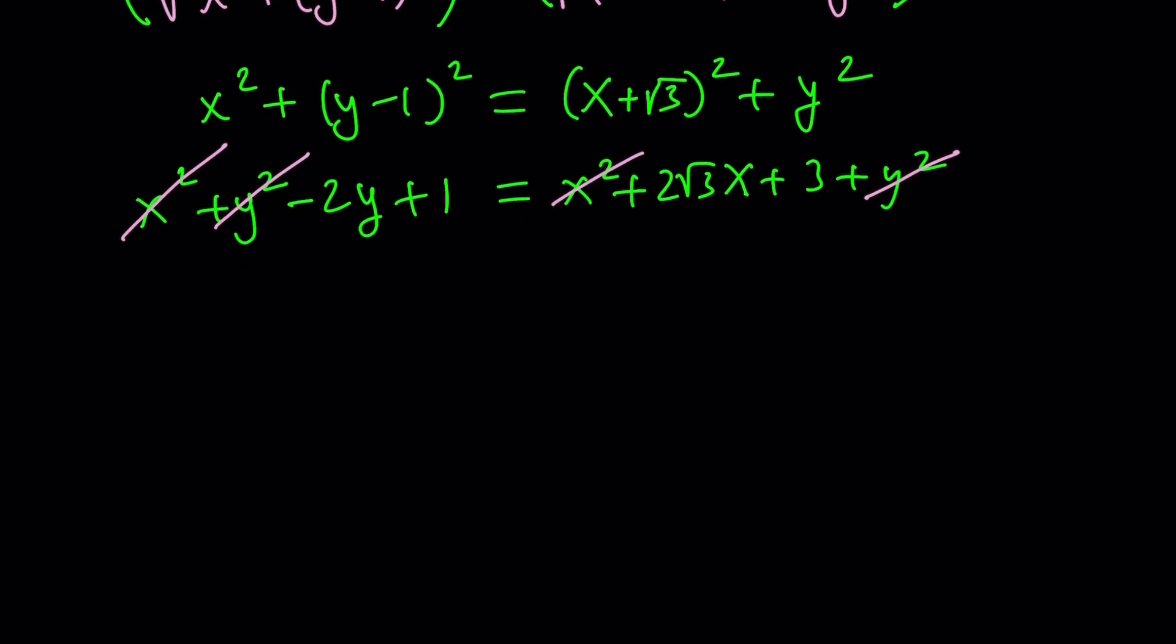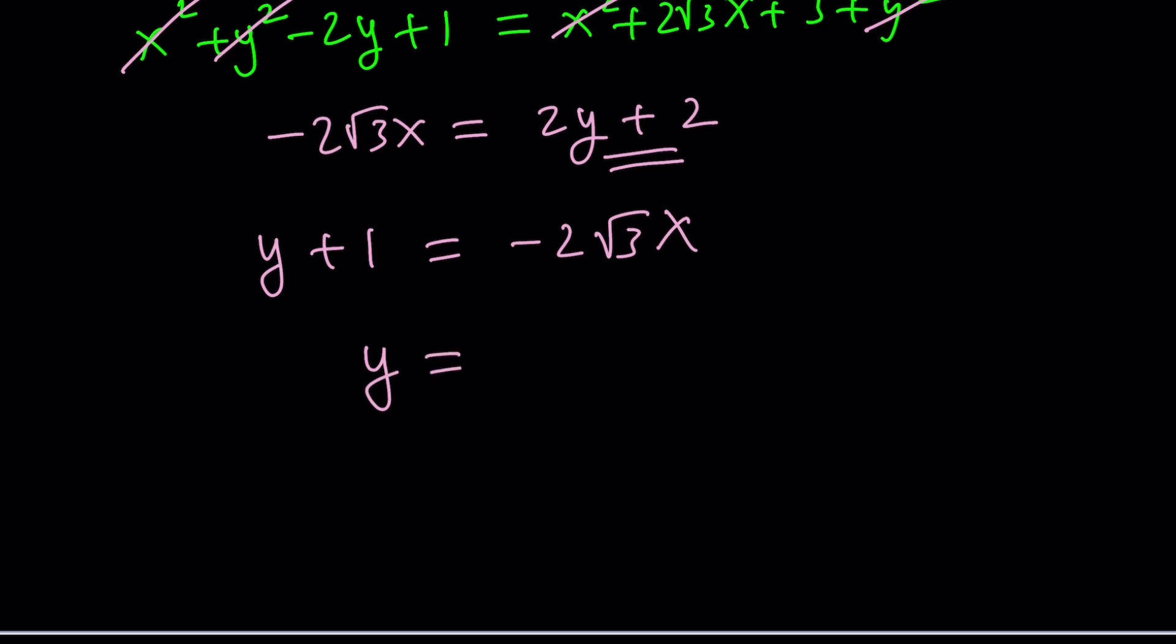Let's go ahead and put the y on the right-hand side and the x on the left-hand side. Negative 2 root 3x is going to equal minus 2y plus 3 minus 1, that's going to be plus 2. I can write this as minus 2y plus 2, but let me divide both sides by 2. That gives me y plus 1 equals negative root 3x. Then I want to isolate the y. y equals negative root 3x minus 1. This is the equation of our locus.